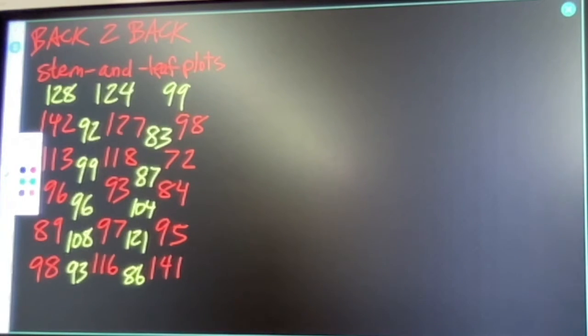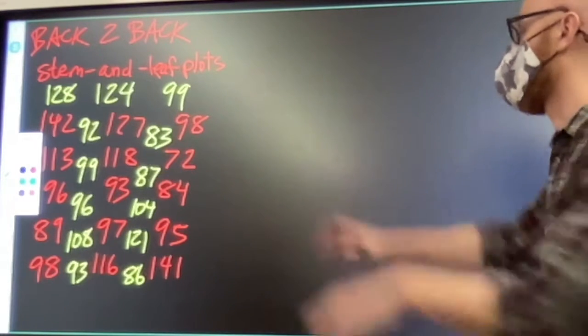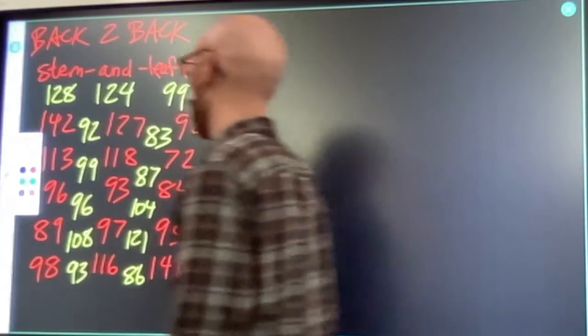Back-to-back stem and leaf plots. How do they work? I've got two sets of numbers. I've got my red numbers and my yellow numbers.